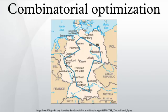Combinatorial optimization problems can be viewed as searching for the best element of some set of discrete items. Therefore, in principle, any sort of search algorithm or metaheuristic can be used to solve them. However, generic search algorithms are not guaranteed to find an optimal solution, nor are they guaranteed to run quickly. Since some discrete optimization problems are NP-complete, such as the traveling salesman problem, this is expected unless P equals NP.